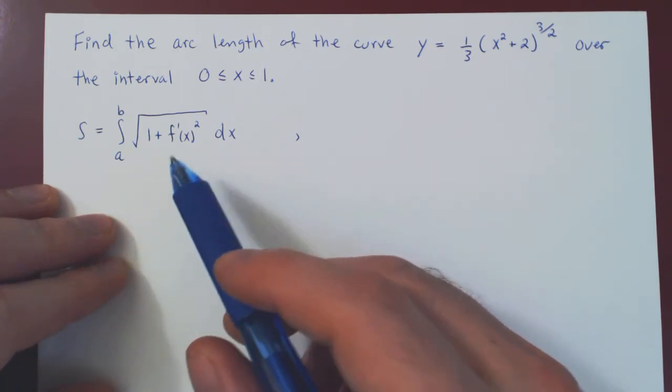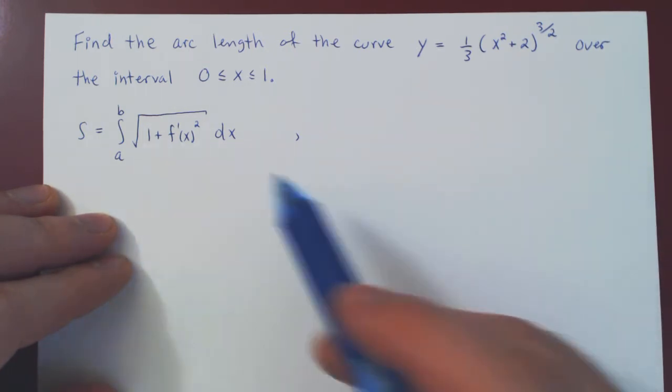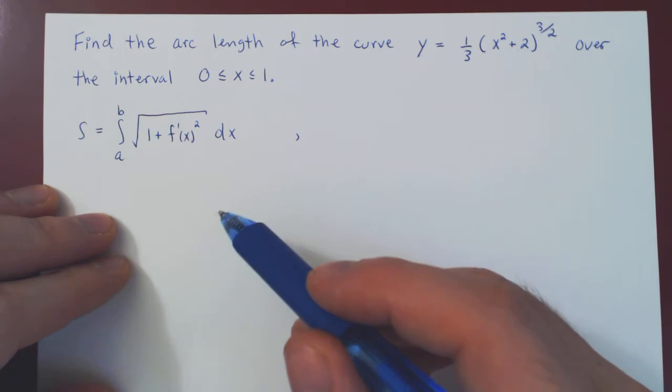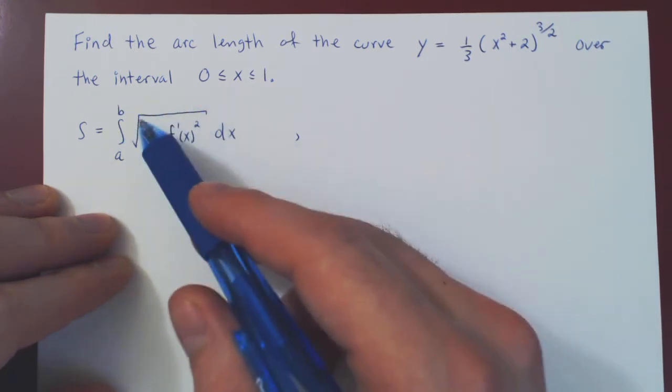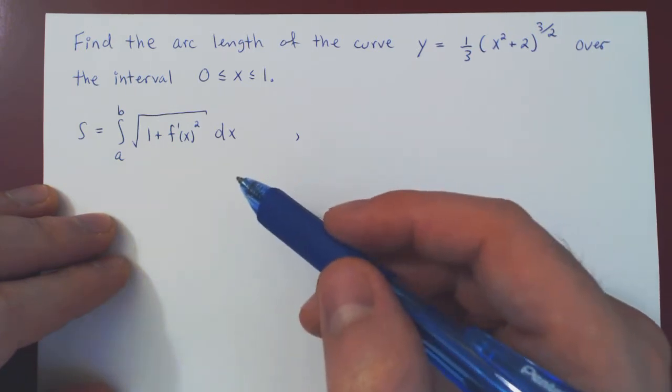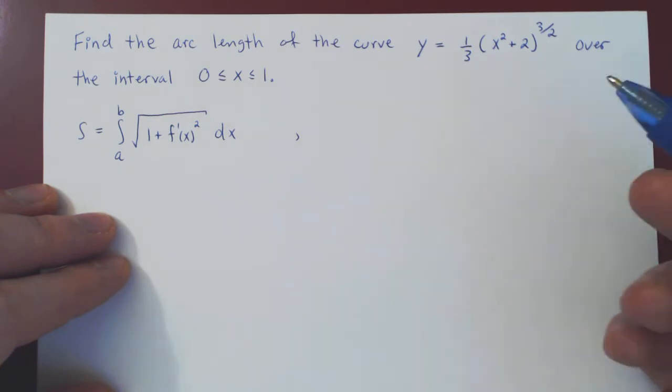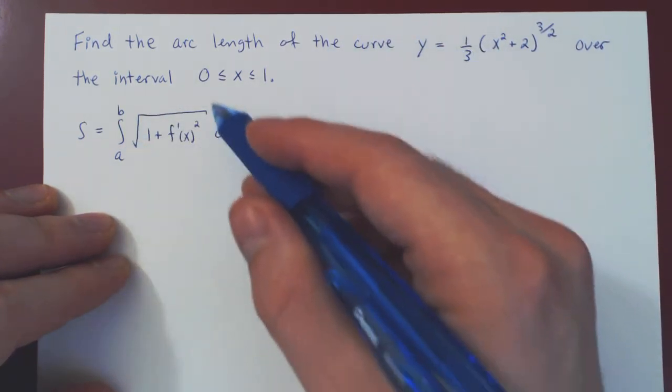But I want to mention before we go ahead a word of caution. If I take a random curve and I try to find its arc length, almost always it is impossible to find the arc length exactly, because the integral you will obtain will be impossible to evaluate exactly.